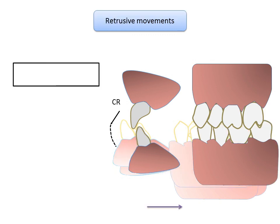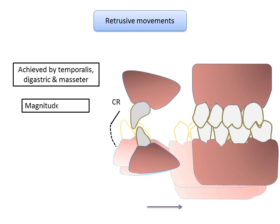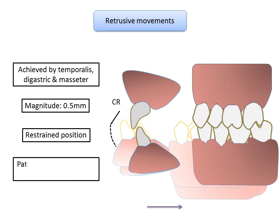Retrusive movement occurs when the mandible is forcefully moved behind its centric relation. It is achieved by the fibers of temporalis, digastric, and the deeper fibers of the masseter. The magnitude of this movement is very meager, only about 0.5 mm, and the resultant position is a strained position. The bilaminar fibers, the temporomandibular ligament, and the contour of the posterior slope of the glenoid fossa determine this movement. It is not a common movement and the patient cannot voluntarily reproduce it.